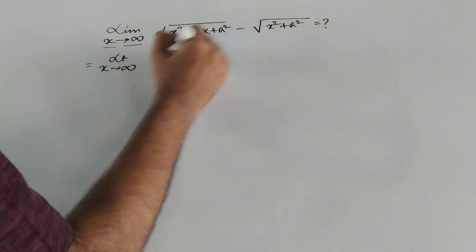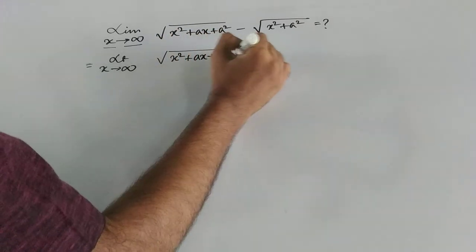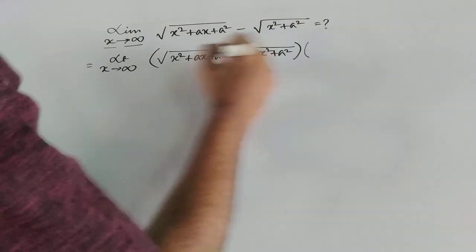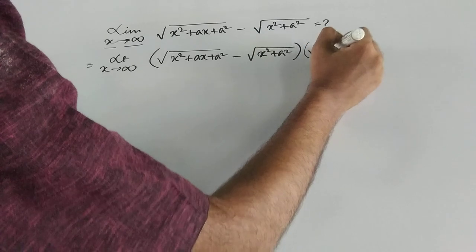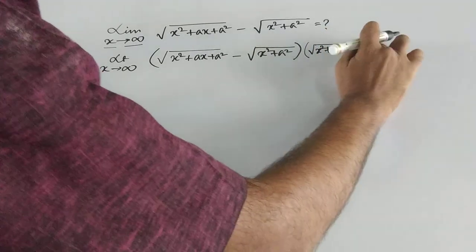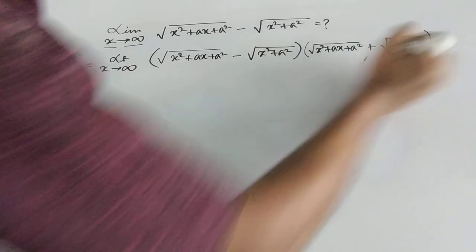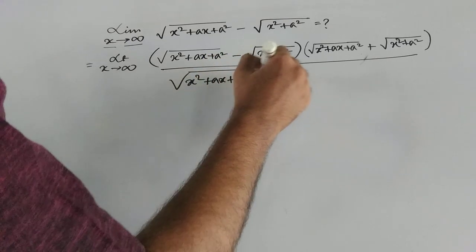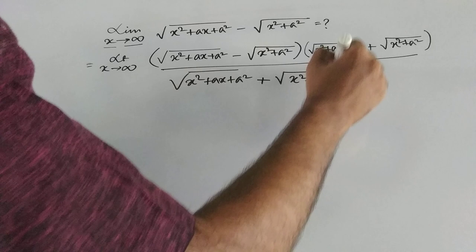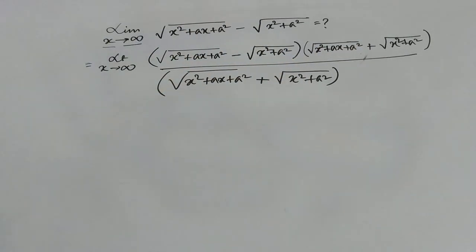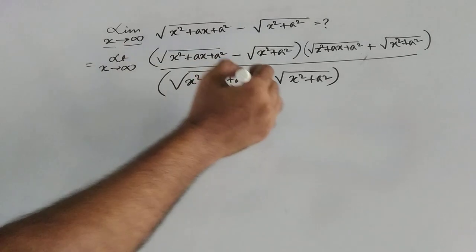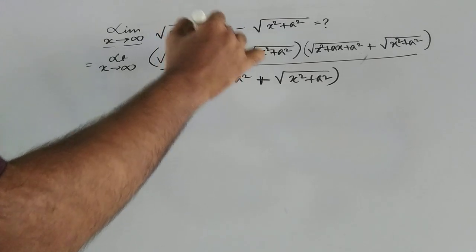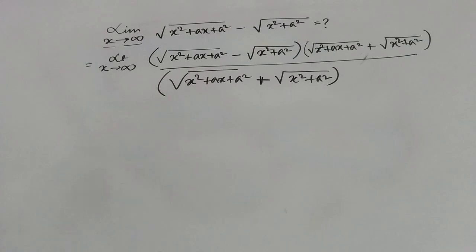So what I am doing is multiplying the entire expression with its conjugate — that is, square root of (x² + ax + a²) plus square root of (x² + a²), whole divided by square root of (x² + ax + a²) plus square root of (x² + a²). The purpose is that this is of the form (a − b)(a + b), so I want to simplify the numerator.